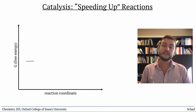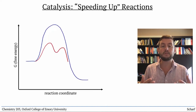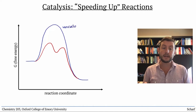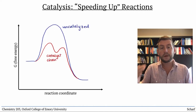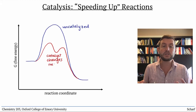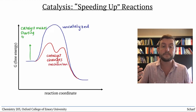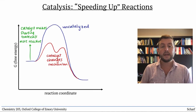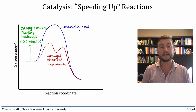Catalysts speed up reactions by somehow changing the reaction mechanism slightly — either by making the starting materials somehow more reactive, or by allowing the reaction to proceed through different intermediates, or both. Either way, the reaction coordinate for a catalyzed reaction looks substantially different than an uncatalyzed reaction.